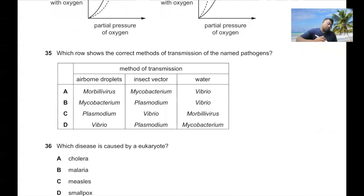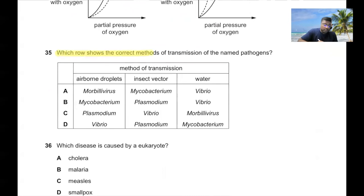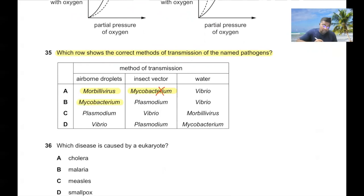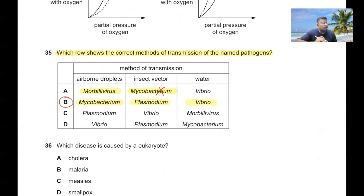Question 35: Which row shows correct methods of transmission for named pathogens? Mycobacterium is spread by airborne droplets — correct. Plasmodium is spread by insect vector — correct. Vibrio cholerae is spread by water — correct. So option B is the correct answer.